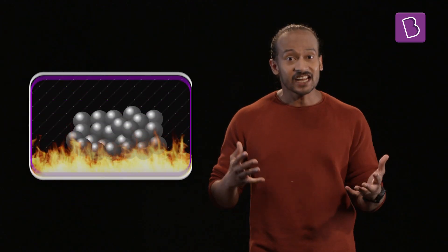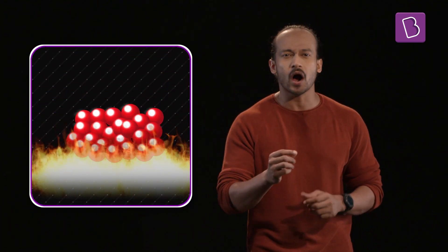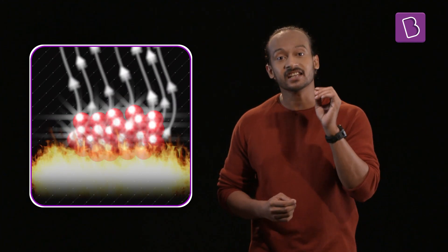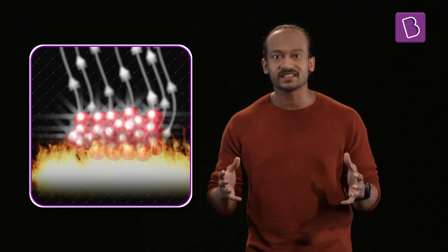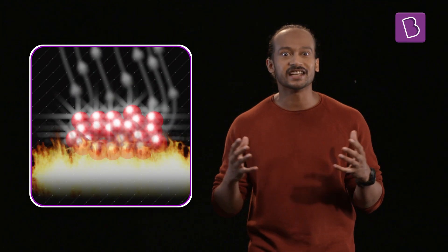It turns out, when any object heats up to very high temperatures they undergo massive changes at an atomic level. This results in the object radiating a glowing white light.